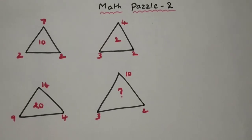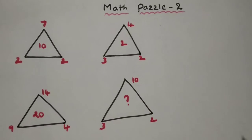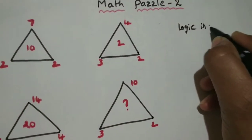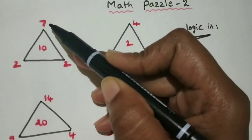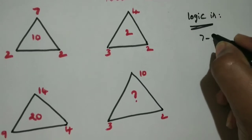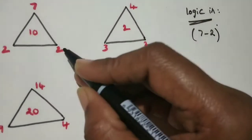Hello friends, my hearty congratulations to Anirud for solving this puzzle. What is the logic of this puzzle? Here, this triangle on the left hand side - subtract these two vertices numbers, 7 minus 2. After that, the third vertex, this one, you should multiply with 2, then the middle number will come.